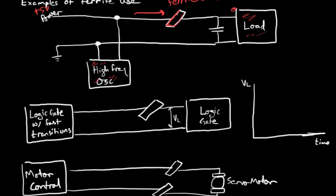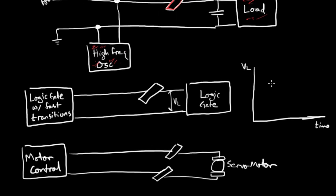The second example I have is a logic gate with very fast transitions here that will interface to a following stage of logic gates. We don't want the very fast transitions to interfere with the second logic gate. But we do want the lower frequency or relatively DC states to feed through. So we put that ferrite bead in the middle there. How is the voltage at the load going to look as a function of time?